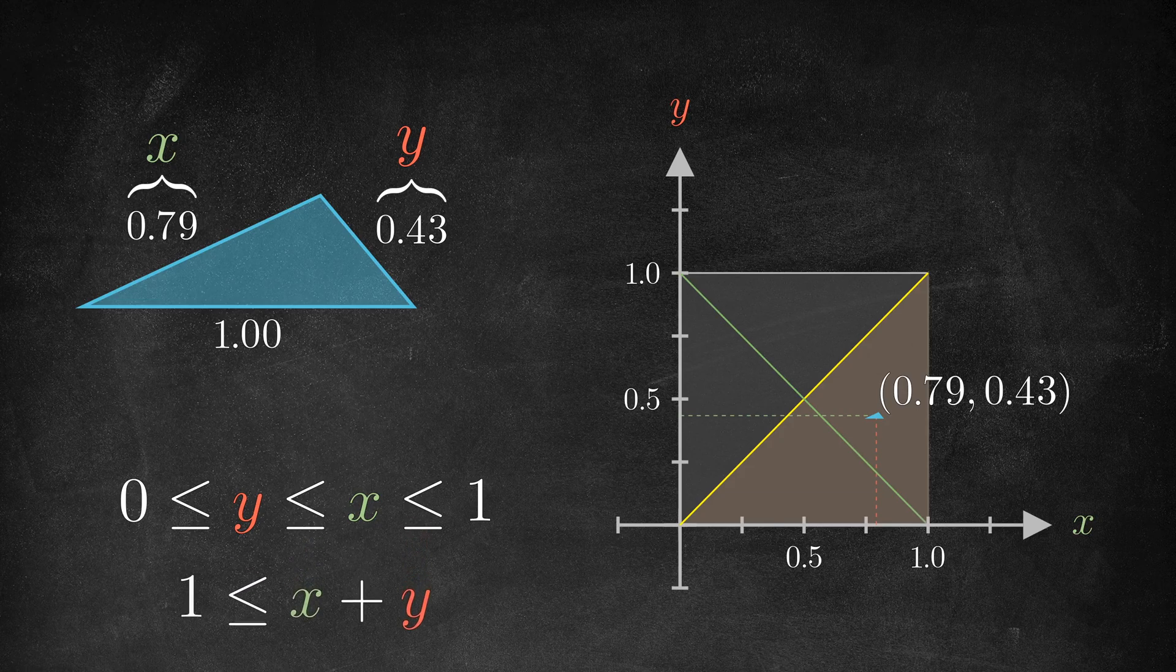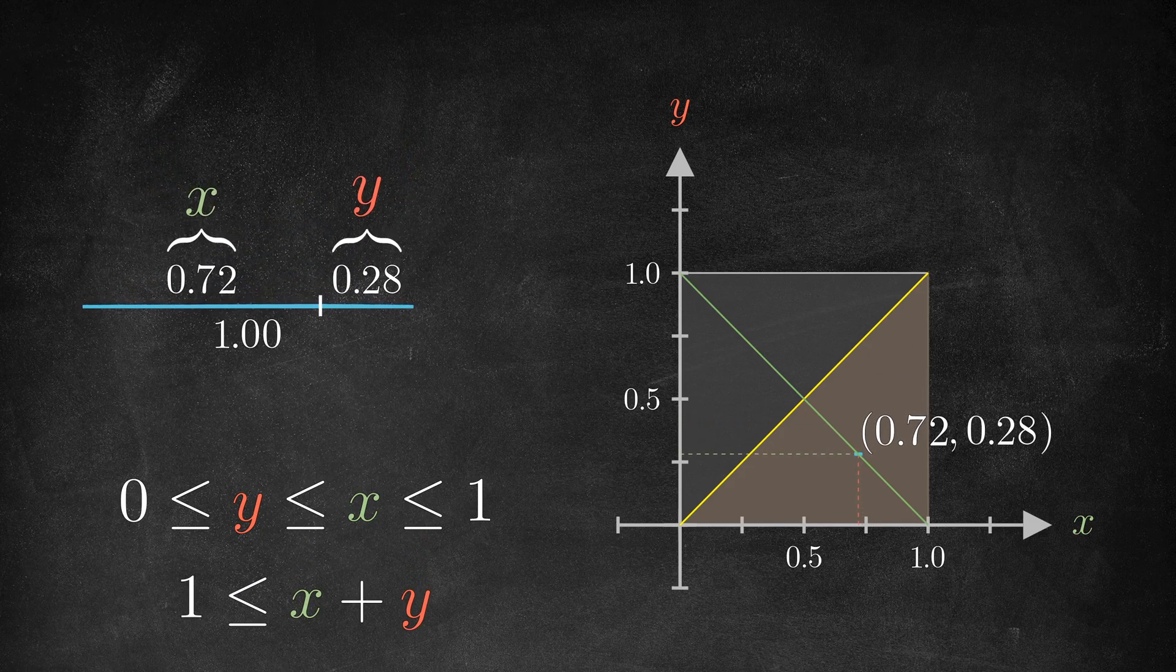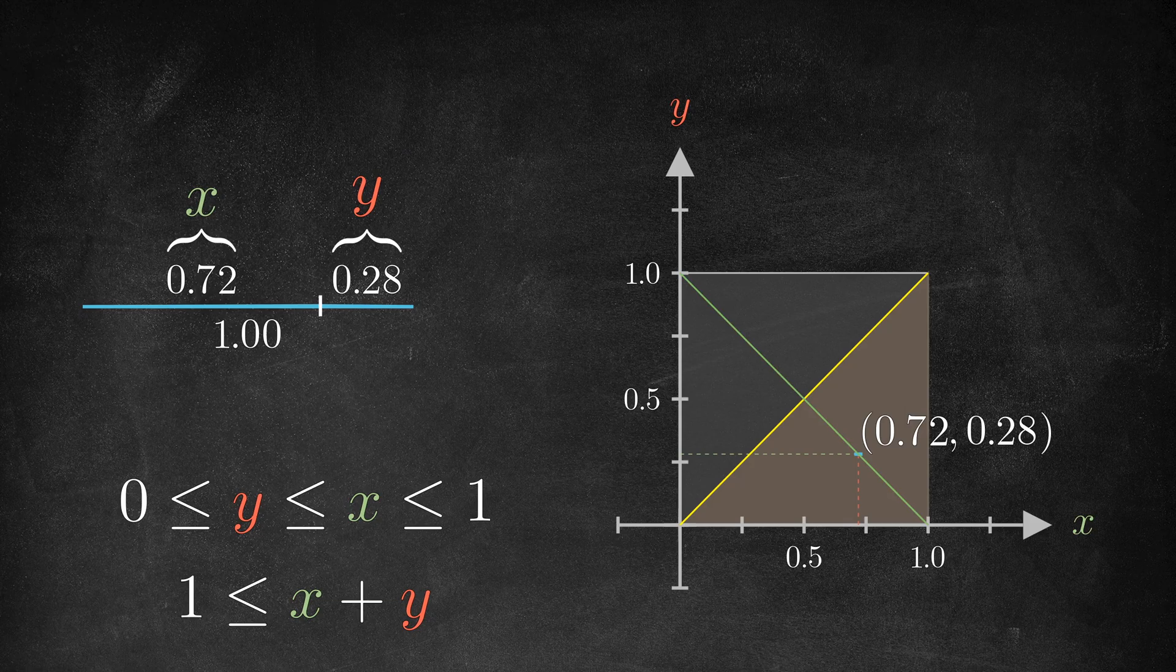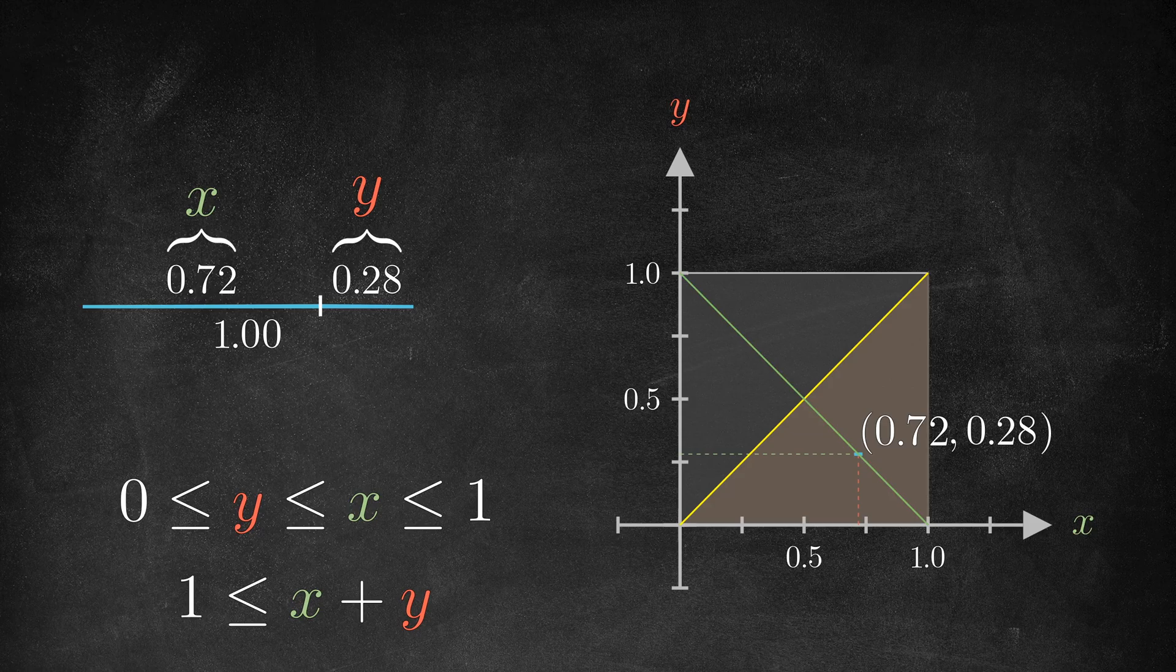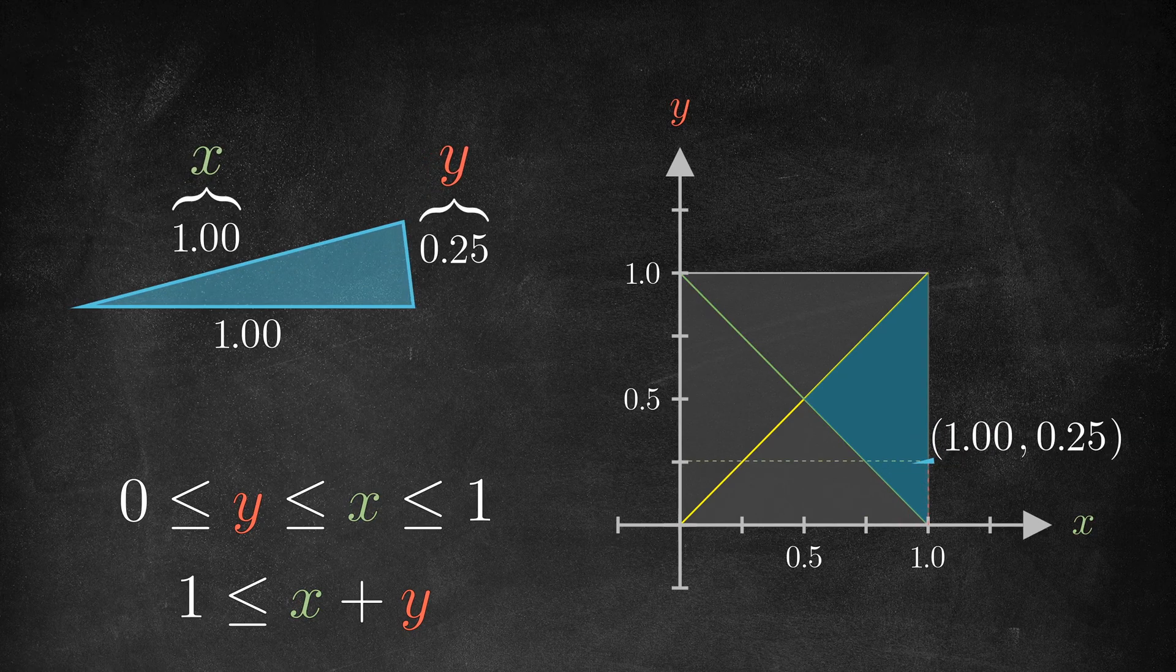One other constraint is that x plus y has to be bigger than 1, meaning that the combined lengths of the two shorter sides of that triangle cannot be smaller than the longest side. This is known as the triangle inequality, and it limits us further to the right region of our box.